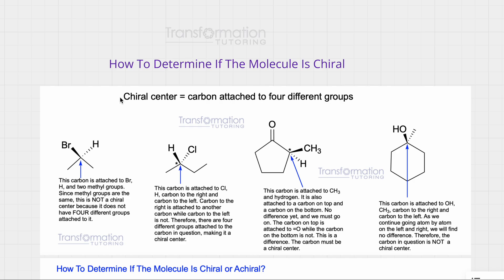The first thing you need to do is understand what a chiral center is and how to find it. There are many different ways chiral centers are named — some textbooks call them stereocenters, chiral carbons, and so on. We're just going to call it a chiral center in this session. A chiral center is a carbon that is attached to four different groups.